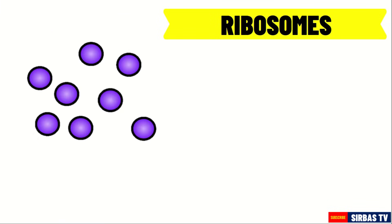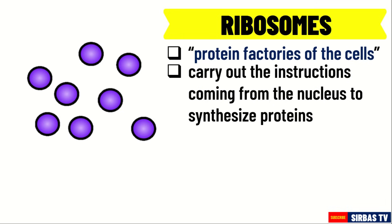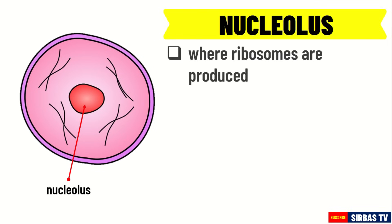Next, we have ribosomes. Ribosomes are the protein factories of the cells. They are the tiny dots that can be seen in the cell. They carry out the instructions coming from the nucleus to synthesize proteins. Next, we have the nucleolus. The nucleolus is the prominent round structure in the nucleus. It is where ribosomes are produced.